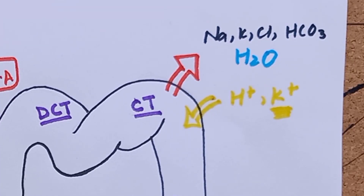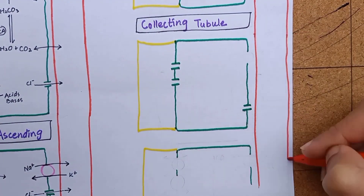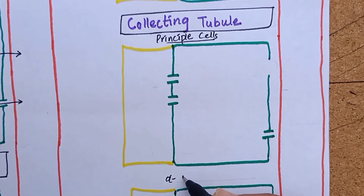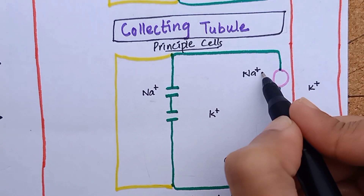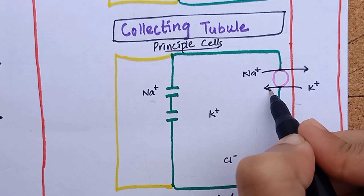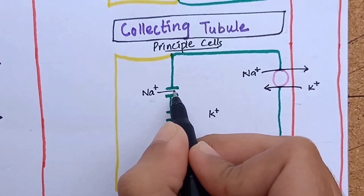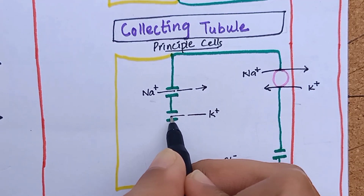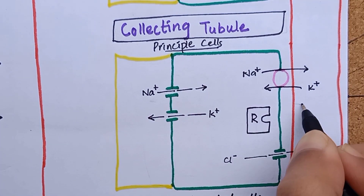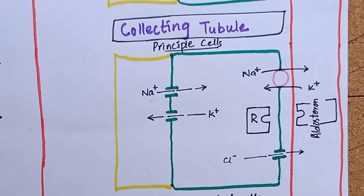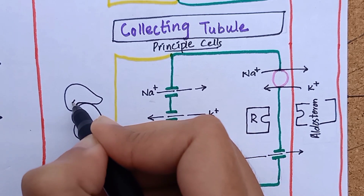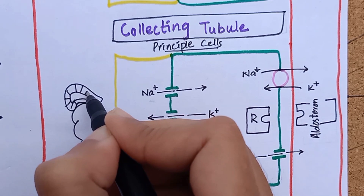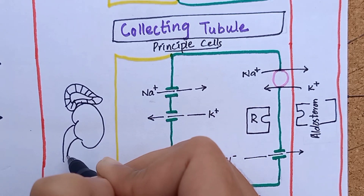The cortical collecting tubule is permeable to water, unlike the previous two segments. There are two types of cells in the collecting tubule: principal cells and intercalated cells. Intercalated cells are further divided into alpha and beta types. A sodium-potassium ATPase pump on the basal membrane maintains low intracellular sodium and high intracellular potassium concentration, allowing movement of these ions along their concentration gradients on the luminal membrane. This pump's activity is controlled by aldosterone, a hormone secreted by the adrenal glands in response to low plasma volume or high plasma potassium. Aldosterone causes potassium secretion in hyperkalemia while reabsorbing sodium to maintain normal blood volume.